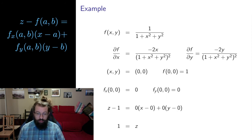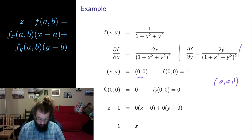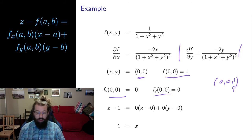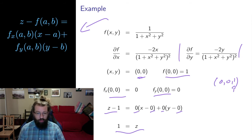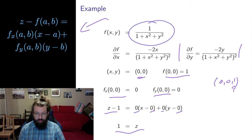Let me do another example. The same scalar field, so same partial derivatives. Now I'm evaluating at (0,0). The function value is 1 there, which is why I have a 1 in the z coordinate. The partial derivatives both evaluate to 0. So if I put all of these pieces into the tangent plane equation, I get z minus 1 equals 0, which simplifies to the plane z equals 1 — a horizontal flat plane. That actually makes sense, because the graph of this function looks like a hill, and the top of the hill is right above the origin. So the top of the hill should have a flat tangent plane — the local directions just go out horizontally from the top.